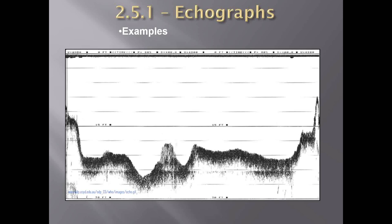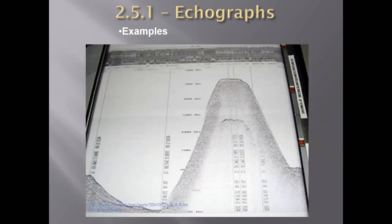One thing to remember is that echo graphs need to be marked with the voyage number, the date of the voyage, the time you started the recording, and the time you stopped the recording. Otherwise it's just a big roll of paper, and if investigators come on board and ask you to produce evidence of the soundings recorded, you will not be able to find which part of the paper recorded the soundings.